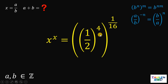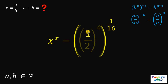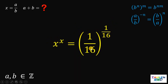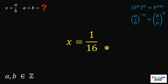Now, 1 half raised to the fourth power is 1 half times 1 half times 1 half times 1 half, which simplifies to 1 over 16. Therefore, the right-hand side is equivalent to 1 over 16 raised to 1 over 16. On the left-hand side we have x raised to x, therefore we can say that x is equivalent to 1 over 16.